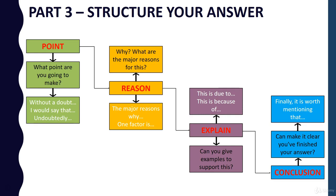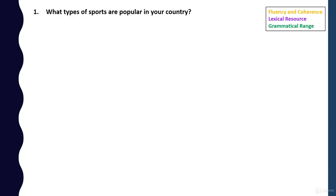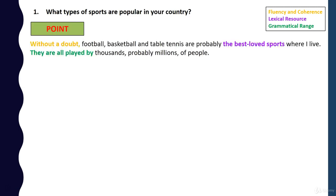So let's take a look at an answer to see this structure in action. If you look at the question: 'What types of sports are popular in your country?' First of all, we need to make the point — what sports are popular. 'Without a doubt, football, basketball and table tennis are probably the best loved sports where I live. They're all played by thousands, probably millions of people.'